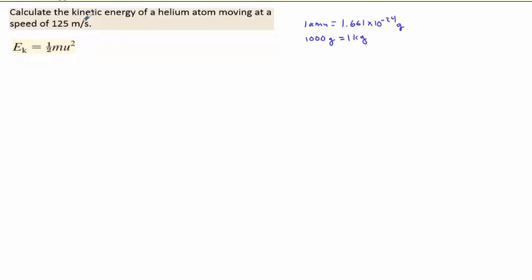The special thing about this equation is that everything must be in standard SI units. For mass, the standard SI unit is kilograms, not grams. For u, the standard SI unit is meters per second, which is the standard unit for velocity. The most common mistake with this equation is not having everything in the right unit — specifically the mass being left in grams instead of kilograms. So make sure that when you're using this equation, you always convert the mass to kilograms.